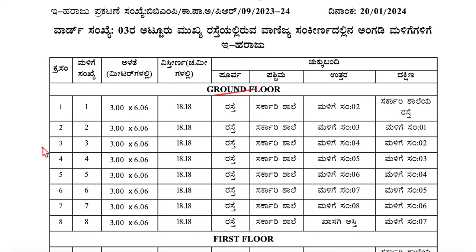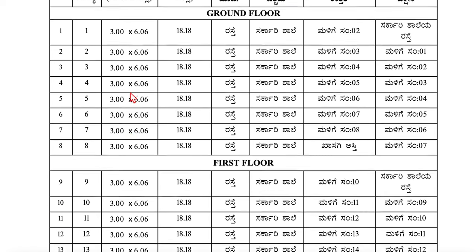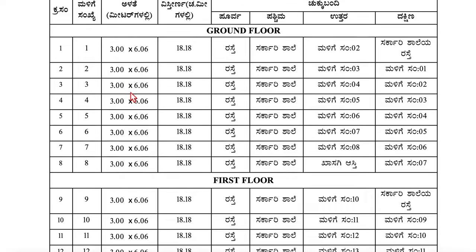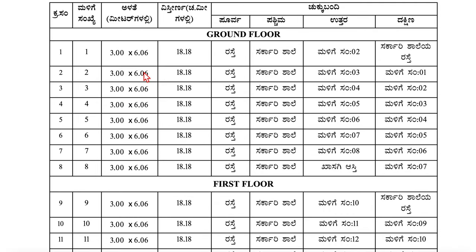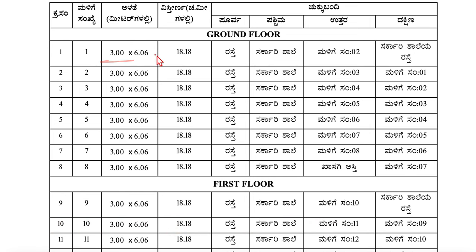In this area, we have shops on the ground floor and first floor. In the ground floor, we have almost 8 shops. In the first floor, we have almost 8 shops. They are all the same dimensions — 3x6 square meters, almost 18.18 square meters. If you convert to square feet, it is almost 10x20, or 20x30. We have all the same dimensions.